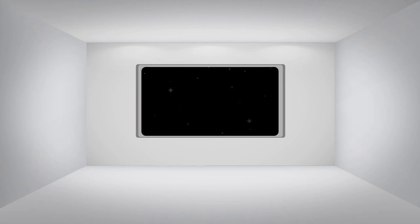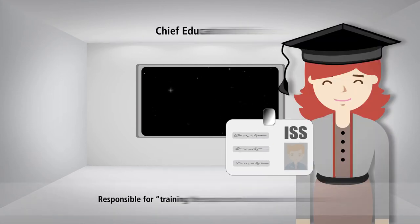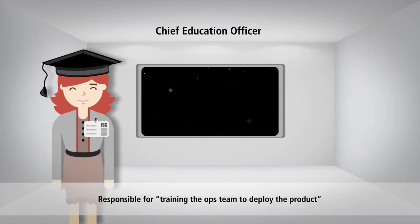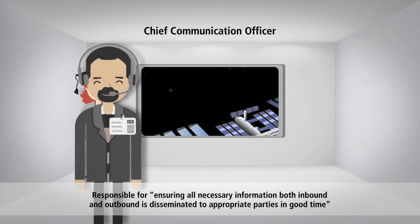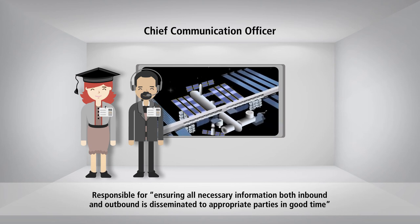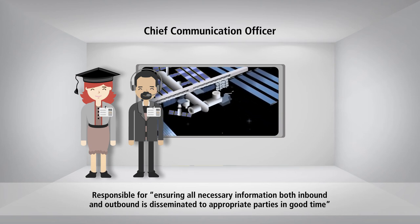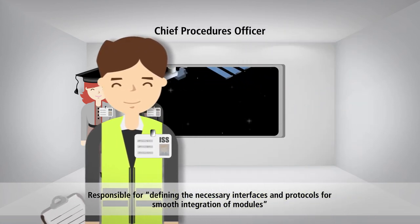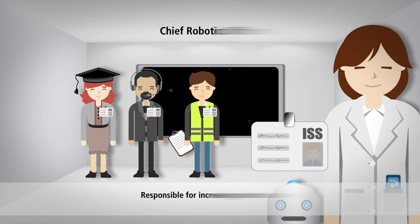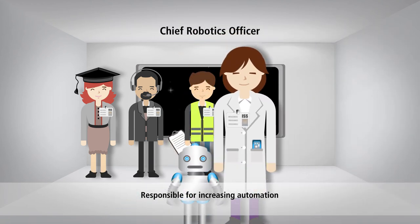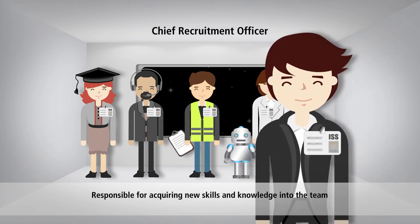Position the next steps as a NASA press conference, scheduled to reveal the plan for the intentions and next phase of ISS Agile. Ask the team to create some fictional roles that team members will be taking on. For example, the chief education officer, who is responsible for training the ops team to deploy the product. The chief communication officer, who is responsible for ensuring all necessary information, both inbound and outbound, is disseminated to appropriate parties in good time. The chief procedures officer, who is responsible for defining the necessary interfaces and protocols for smooth integration of modules. The chief robotics officer, who is responsible for increasing automation. Or perhaps the chief recruitment officer, who is responsible for acquiring new skills and knowledge into the team.